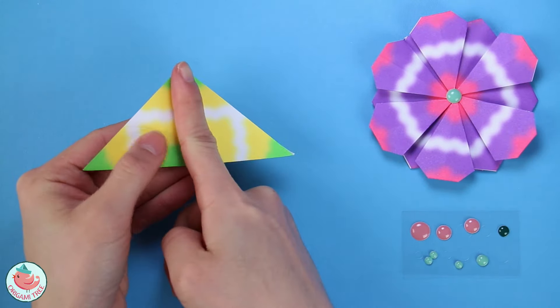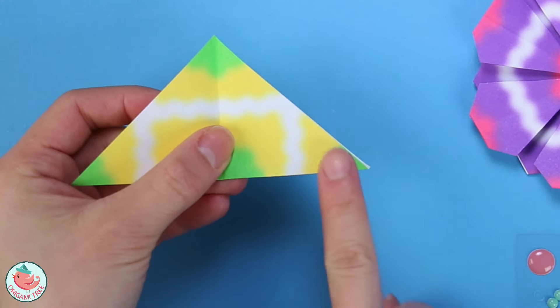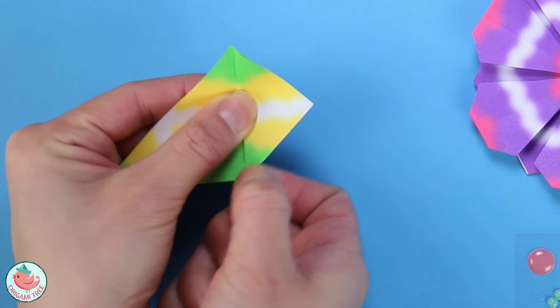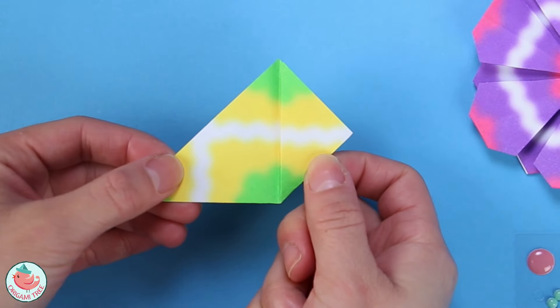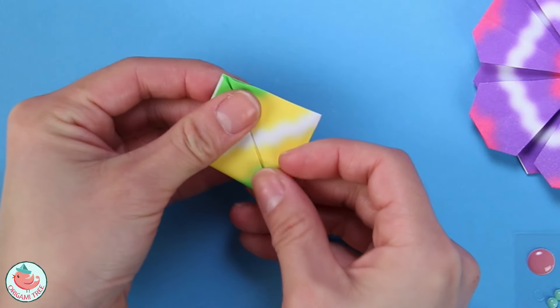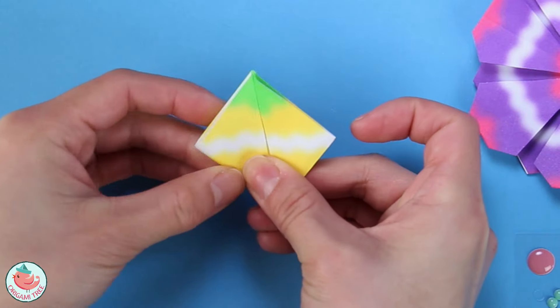And now we have our center line. So then you want to take this right flap over here and we're going to fold it diagonally to align with that vertical center line that you just created. So just crease it in. Do the exact same thing with the left side. So we're going to fold it diagonally, align it to the center and crease it in.